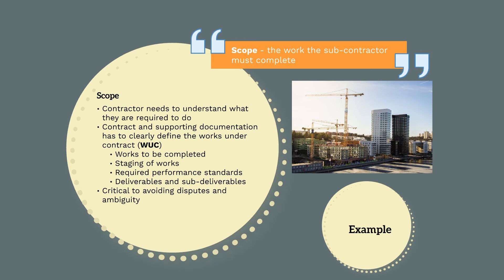The contract scope is the work the subcontractor has been engaged to complete — what they need to do to get paid. This needs to be clearly defined so the contractor clearly understands what they are being paid to do. This means defining the works to be completed, the staging of the works, the required performance requirements and standards, and the deliverables and sub-deliverables. It's critical for these things to be clearly and accurately defined to avoid disputes during the delivery stage.